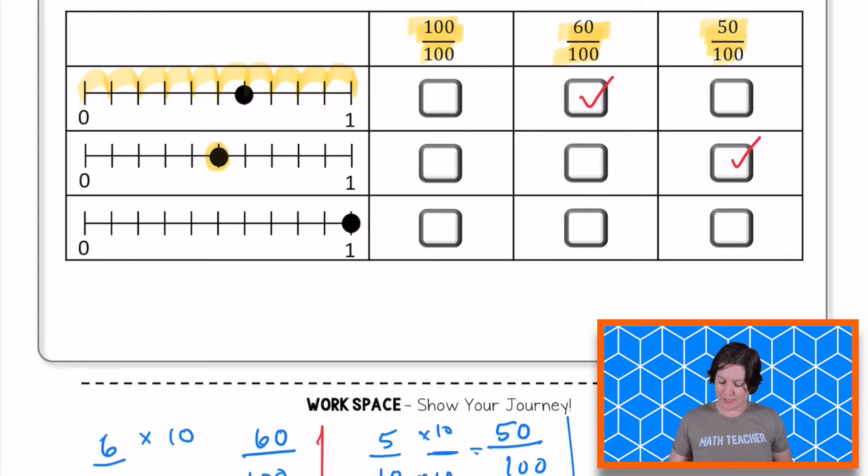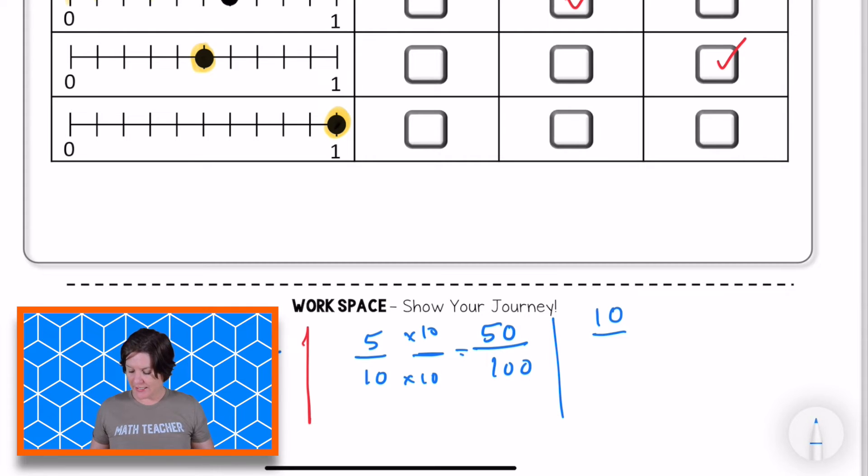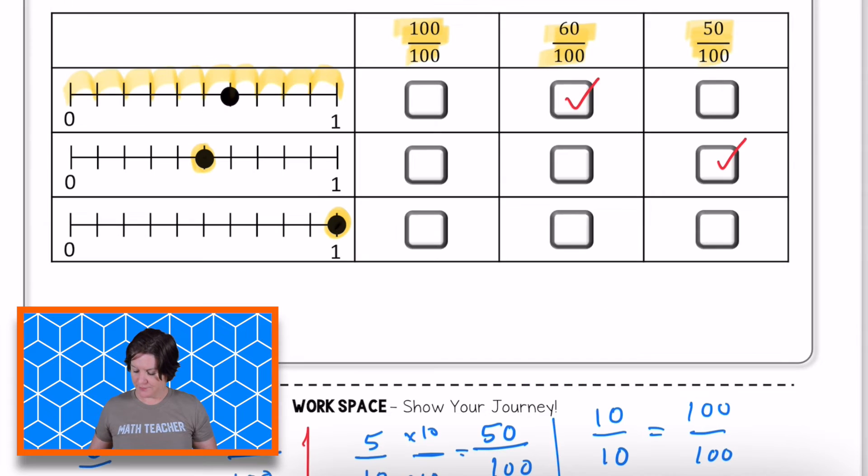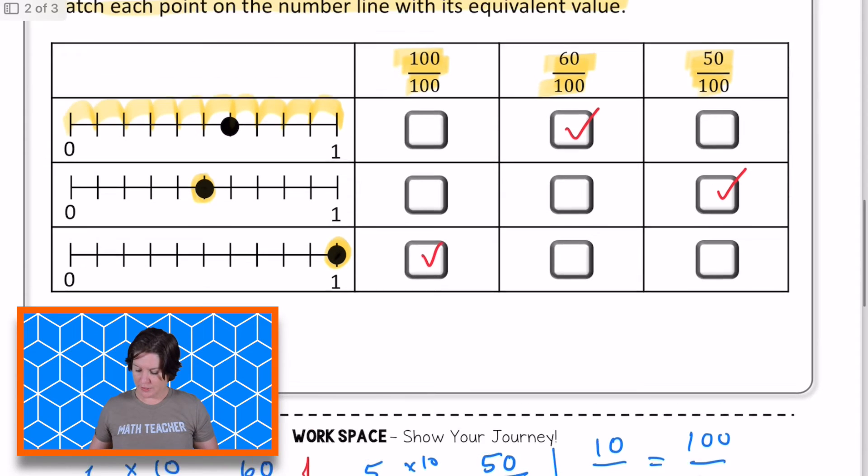50 hundredths. And then finally, for the last one, it is located right here at the one. So if something is one whole, it has the same number in the numerator and the denominator. So this would be 10 tenths. The point is located at 10 out of 10 equal hops, which is equal to what? 100 hundredths. That is correct. So we can go ahead and mark that one up here. Perfect.